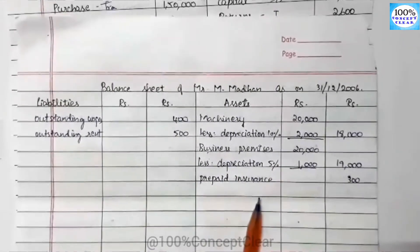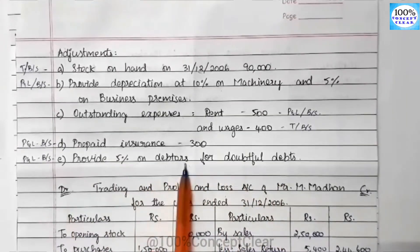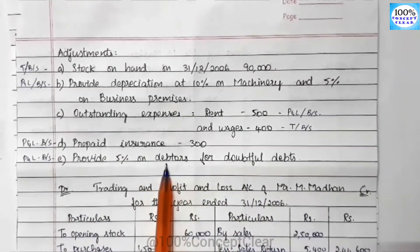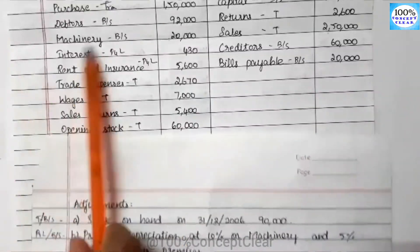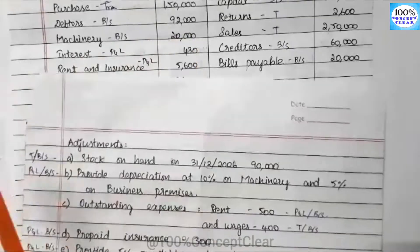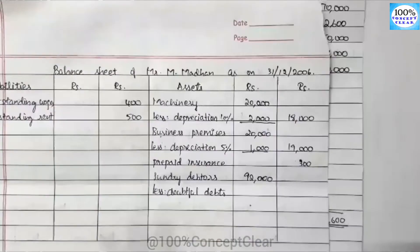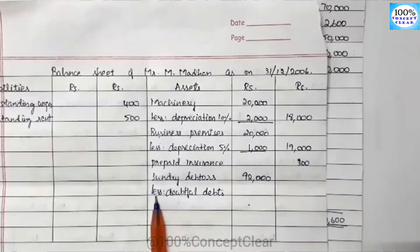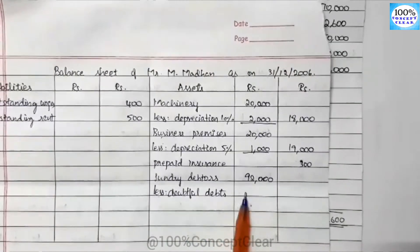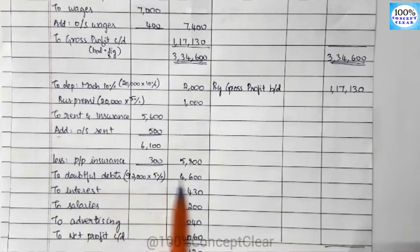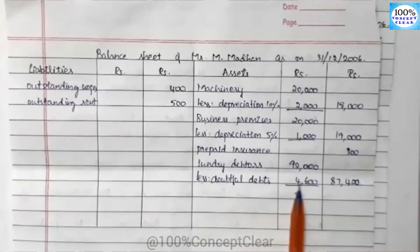Next, debtors are a Balance Sheet asset item. We have to note that debtors are $92,000. In the P&L account we have the provision for doubtful debts of $4,600. So debtors $92,000 minus provision for doubtful debts $4,600 equals $87,400 — that is the net debtors value.